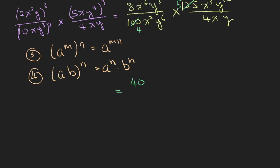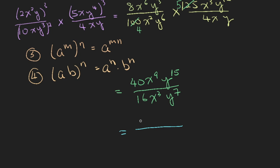How many pieces of x do you have? 6 here and 3 here — 9 altogether. For y, 3 and 12 give you 15 pieces. On the denominator, 4 times 4 is 16, x has 3 pieces (2 here and 1 here), and y to the power of 7. So we have 40x^9 y^15 over 16x^3 y^7. The common factor of 40 and 16 is 8, giving 5 over 2. Then x^9 divided by x^3 leaves x^6, and y^15 divided by y^7 leaves y^8. The final answer is 5x^6 y^8 over 2.